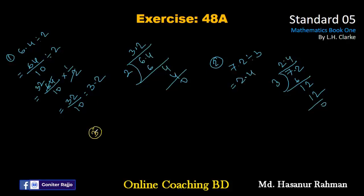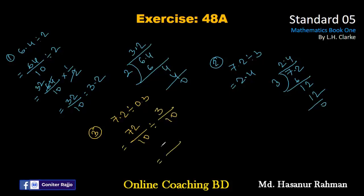Now number three says 7.2 divided by 0.3. We can solve this one by using fractions. 7.2 actually represents 72 divided by 10, divided by 0.3 which represents 3 divided by 10. Now we can write 72 by 10 multiplied by 10 divided by 3. We can cancel 10 and 10, and 72 divided by 3 should be 24. So the answer should be 24.